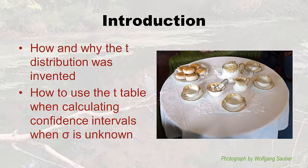Here's what we're going to go through. First, I'm going to describe how and why the t distribution was invented and give you the important backstory on why this came about. Then I'm going to show you how to use the t table when calculating confidence intervals when the population standard deviation is unknown. Now, if you see there, that's a t table — but that's not the kind of t table we're going to use. However, this t table is probably better than ours because it looks really yummy, doesn't it?